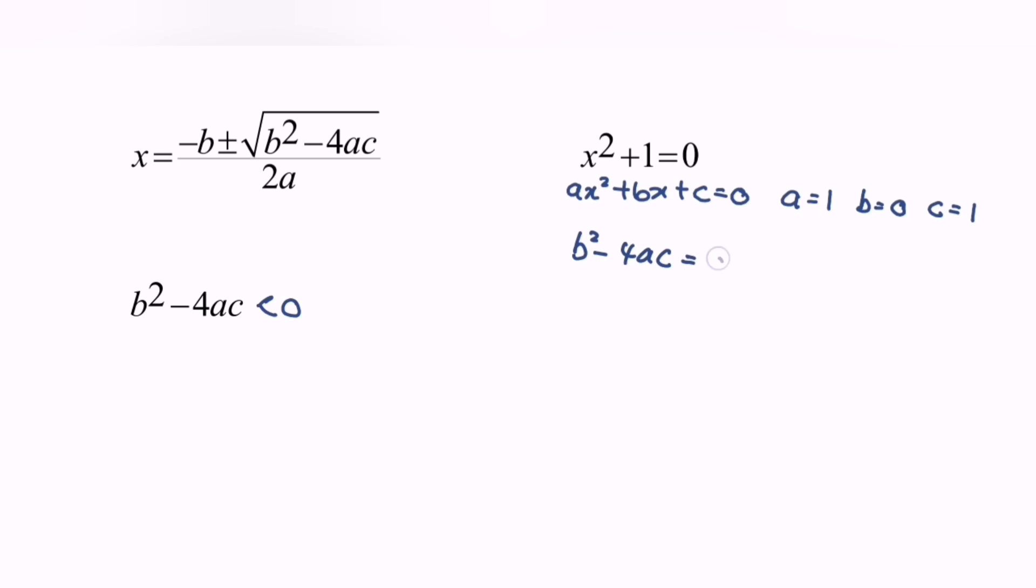So now we can substitute into the discriminant where we have b squared minus 4ac, which equals 0 squared minus 4 multiply with a, we have 1, multiply with c, we also have 1. So finally, b squared minus 4ac equals negative 4. And we can say b squared minus 4ac is less than 0, meaning that there is no real root.